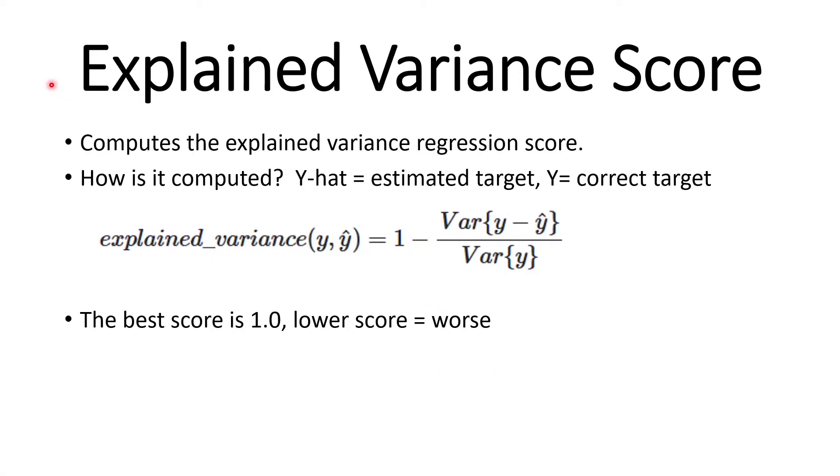This regression metric is called explained variance score. Explained variance score computes the explained variance regression score. And how is this computed? Y hat in this situation is equal to the estimated target and y is the correct target. So y hat here is the predicted value and y is the actual value.